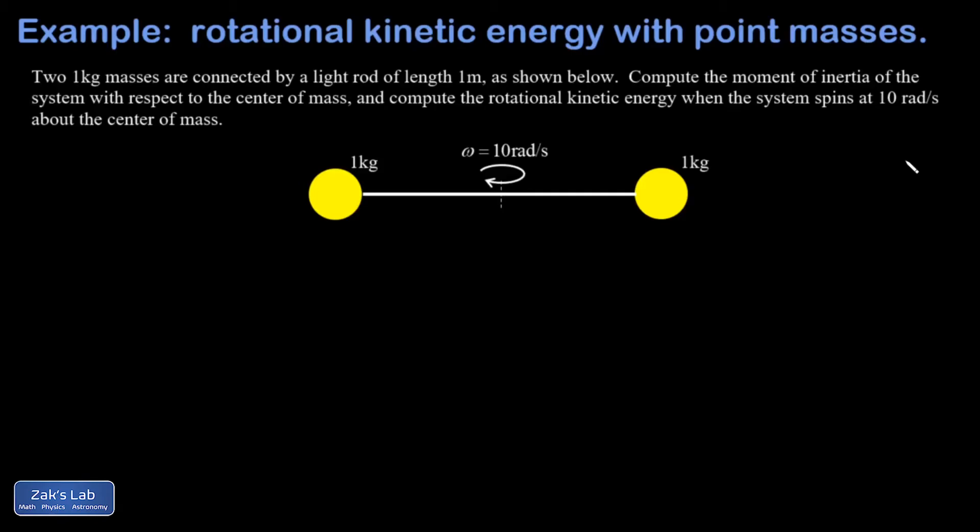Let's apply this to a simple example. So here I have two one kilogram masses. They're attached by a light rod, meaning I'm just going to neglect any energy carried by the rod itself. It has a length of one meter, and I want the moment of inertia. And again, this is key that it changes depending on what rotation axis you choose, so I have to say with respect to what rotation axis. And in this case, I said the center of mass, so we're going to spin it around the center of mass, which is clearly just in the middle of the rod.